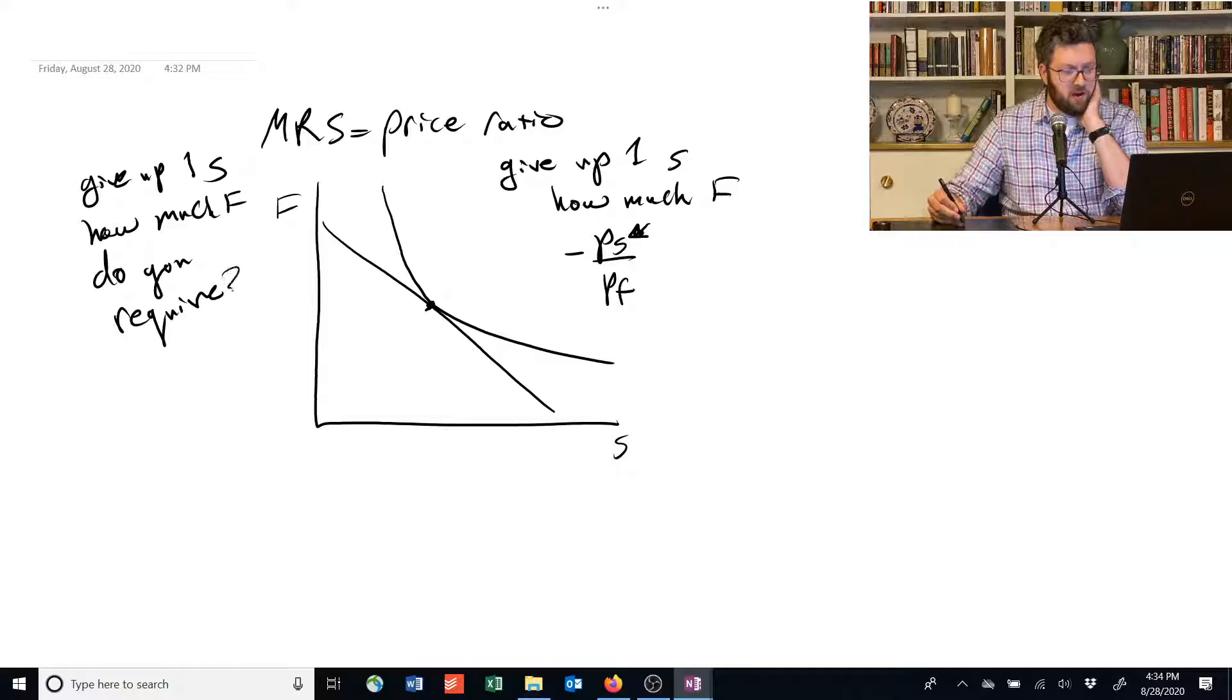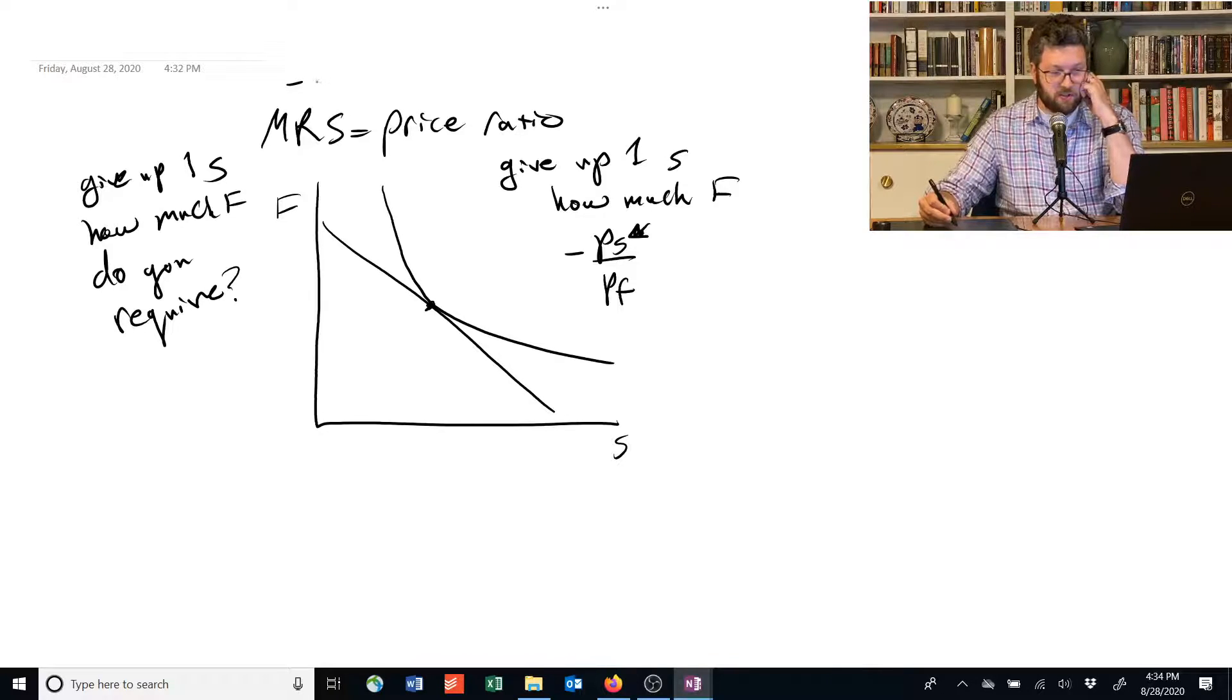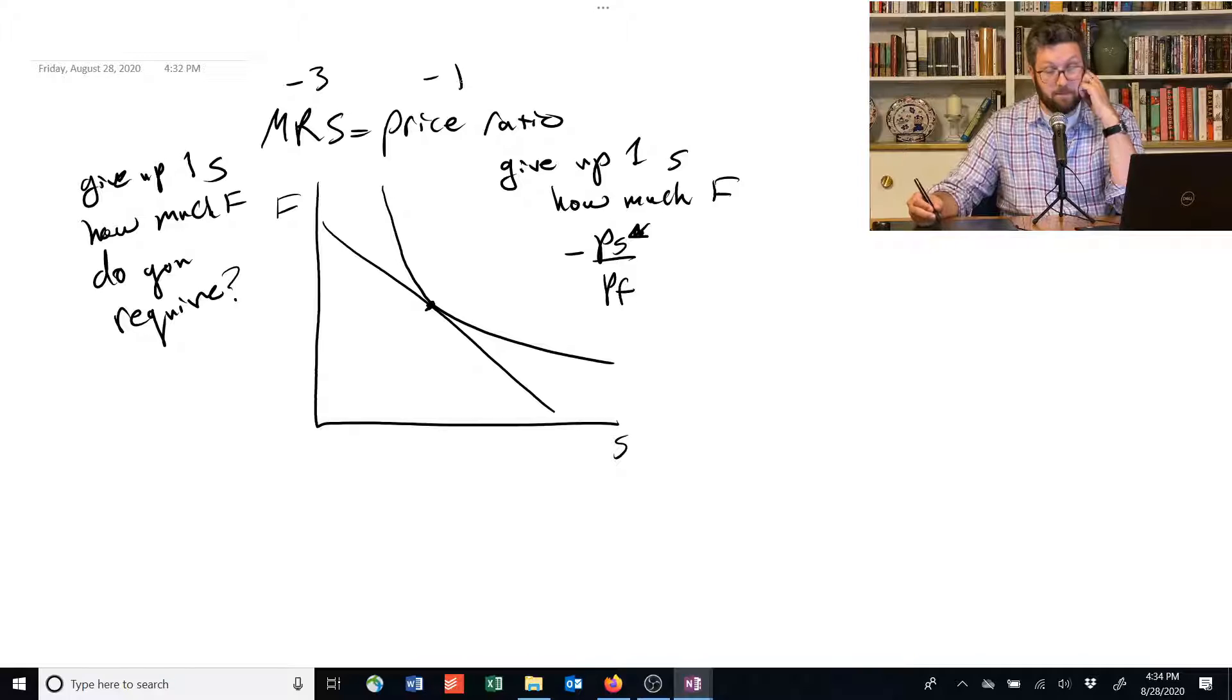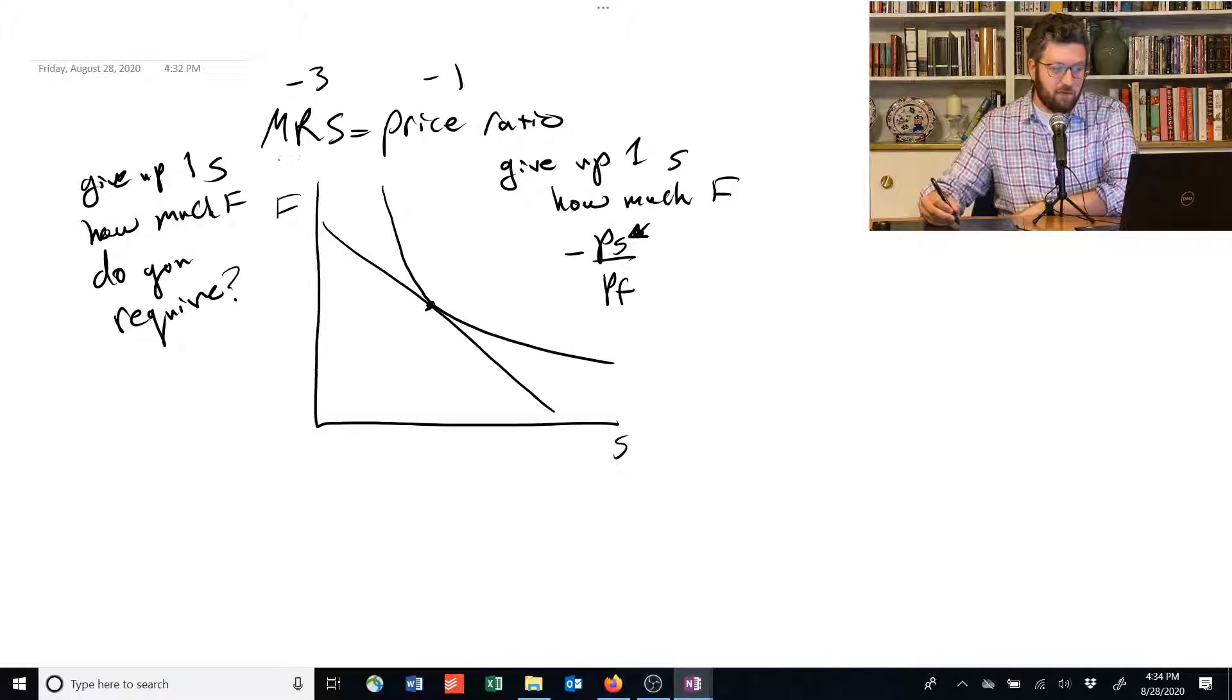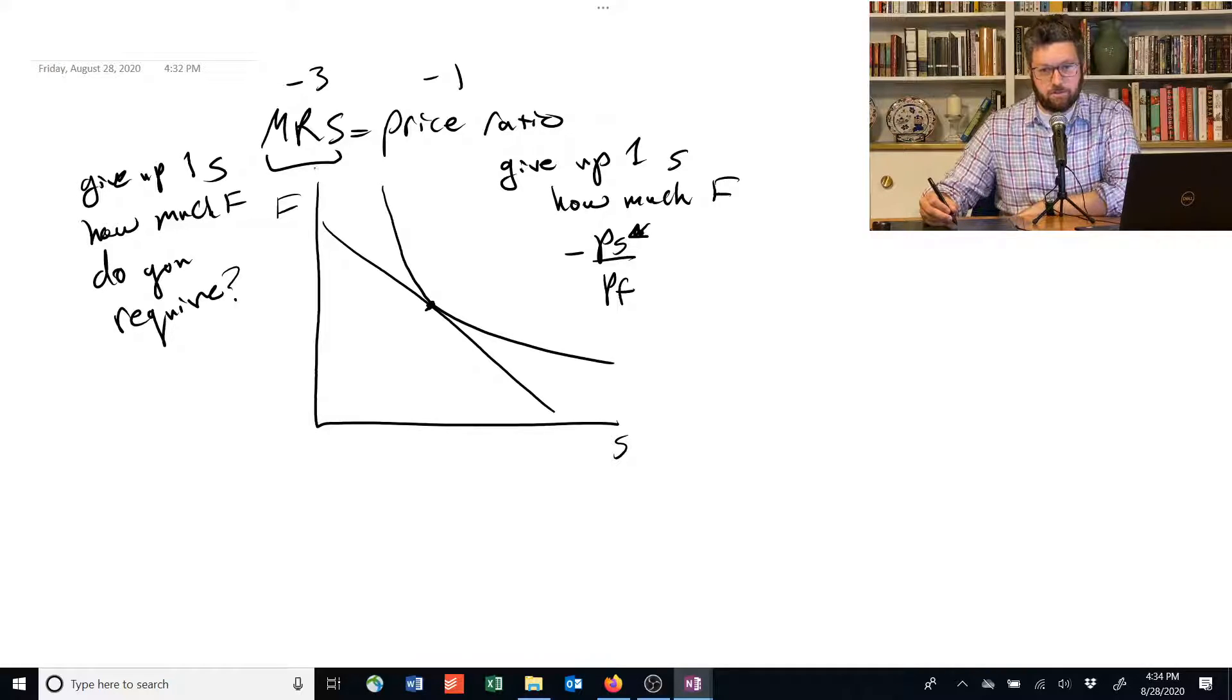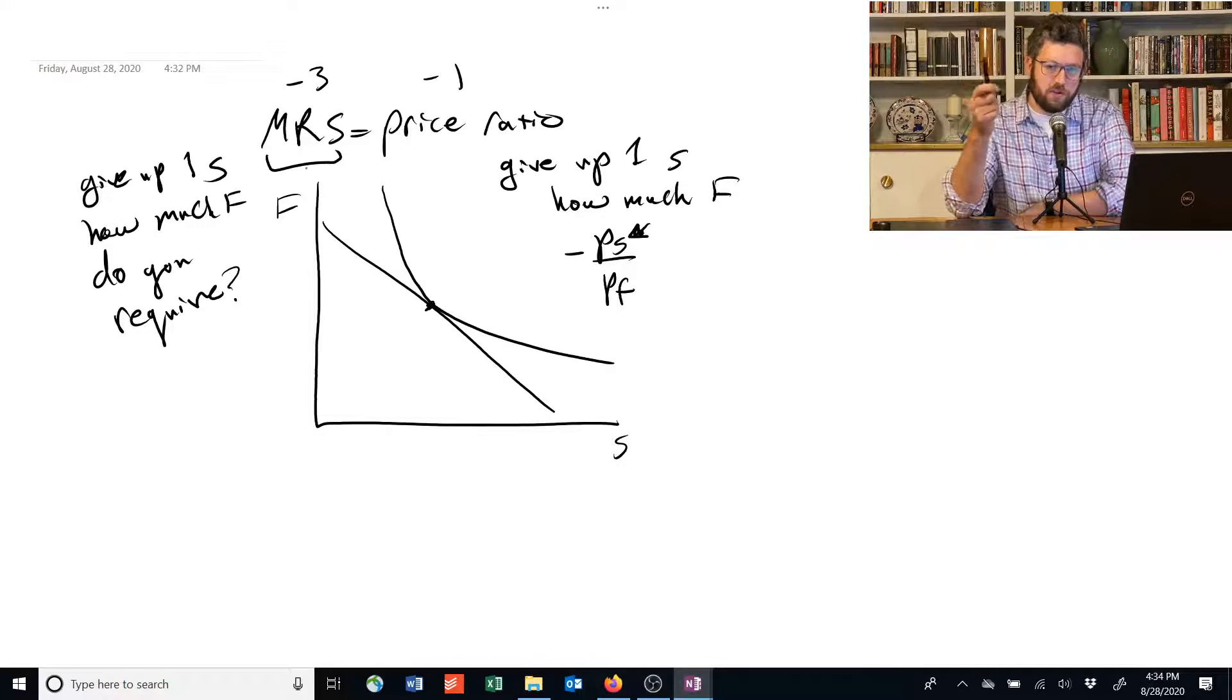And if these things are not equal to each other, then there's a way that you can do better. So suppose this one was equal to negative 3, and this one was equal to negative 1. That would tell us that if you give up one unit of shelter, you need to be given three units of food to be equally well off.